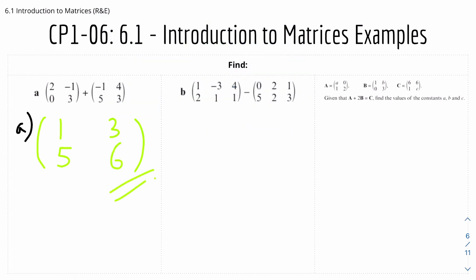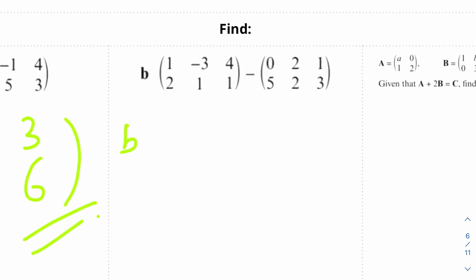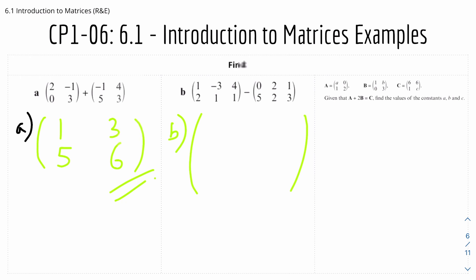And for part b you're basically subtracting the matrices. As usual you just subtract the corresponding element. So 1 minus 0 is 1, minus 3 minus 2 is minus 5, 4 minus 1 is 3, 2 minus 5 is minus 3, 1 minus 2 is minus 1, and 1 minus 3 is minus 2.